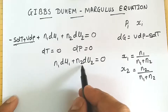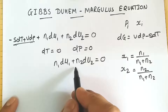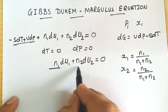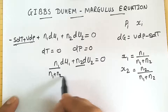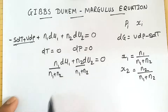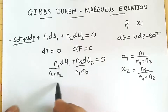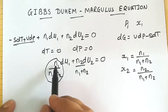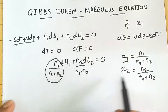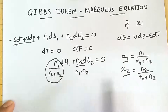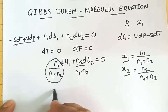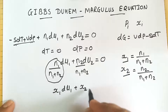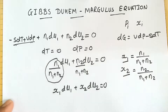We will convert n1 and n2 into mole fractions by dividing both terms by n1 plus n2. So n1 upon n1 plus n2 becomes x1, and n2 upon n1 plus n2 becomes x2. We may therefore substitute to get: x1 dμ1 plus x2 dμ2 equals 0.